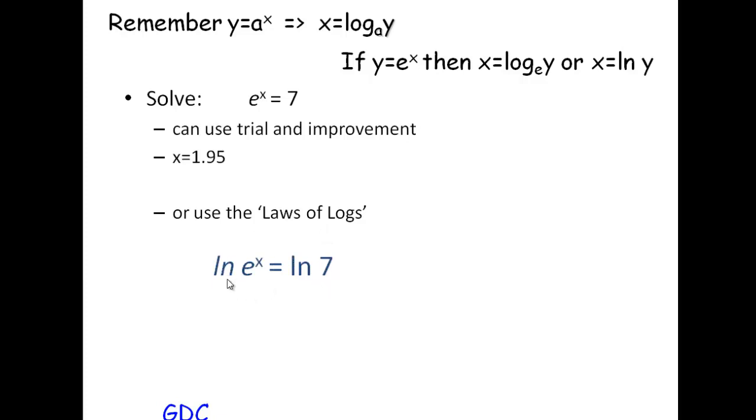If we log both sides, because it's e to the x we're dealing with, we use log base e, ln. So e to the x equals 7 becomes ln e to the x equals ln 7.